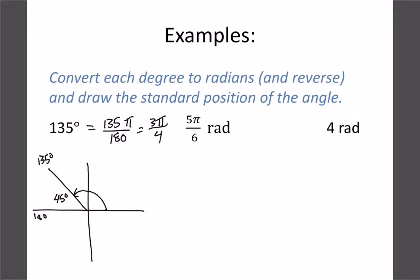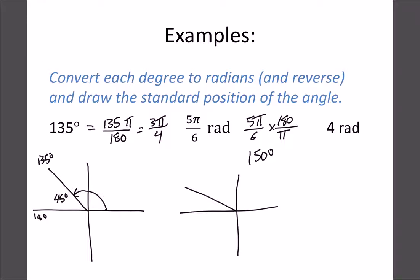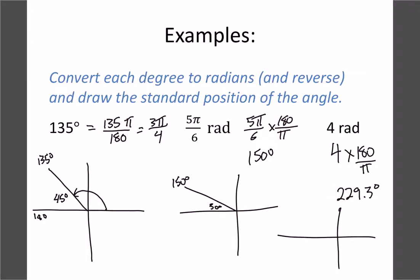For 5π/6, convert to degrees: multiply by 180/π, the π's cancel, giving 5 × 180/6 = 150 degrees. On the diagram, 150 degrees is 30 degrees short of 180. For 4 radians (a decimal), multiply by 180/π to get approximately 229.3 degrees — located about 49.3 degrees past the 180 mark.